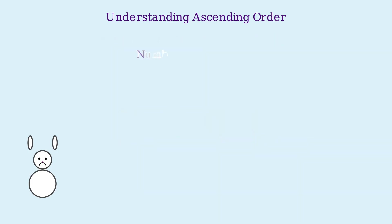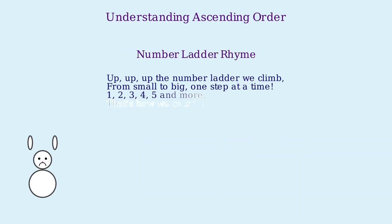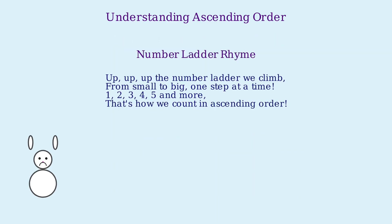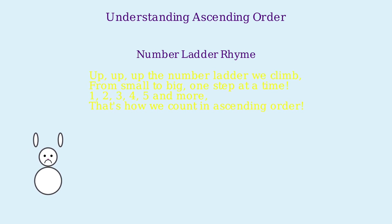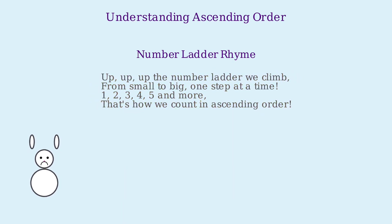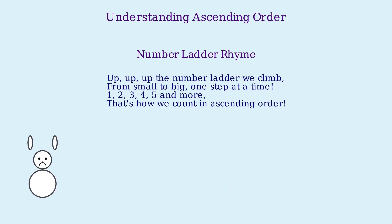Let's learn a rhyme to help us remember ascending order. Up, up, up the number ladder we climb, from small to big, one step at a time. One, two, three, four, five, and more. That's how we count in ascending order.